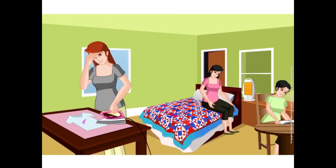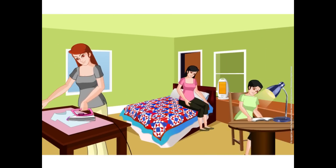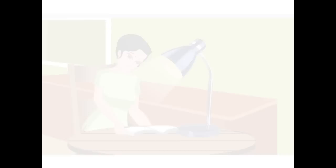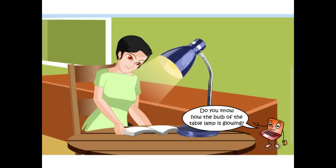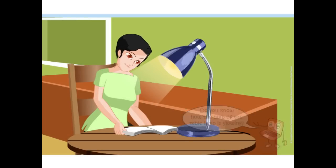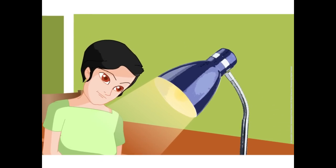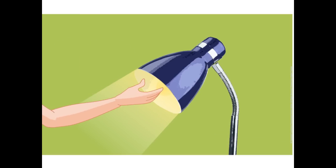Yes, all of them are using electrical appliances. Do you know how the bulb of the table lamp is glowing? The table lamp is glowing because the filament of the bulb is heated to a high temperature when electricity flows through it. This is the reason why you feel the heat when you touch a glowing bulb.